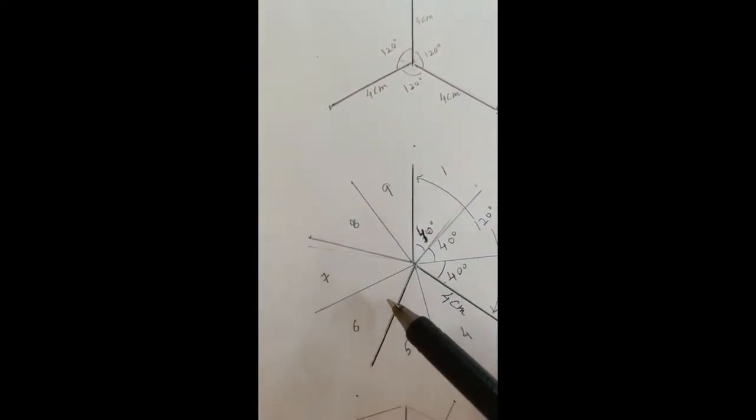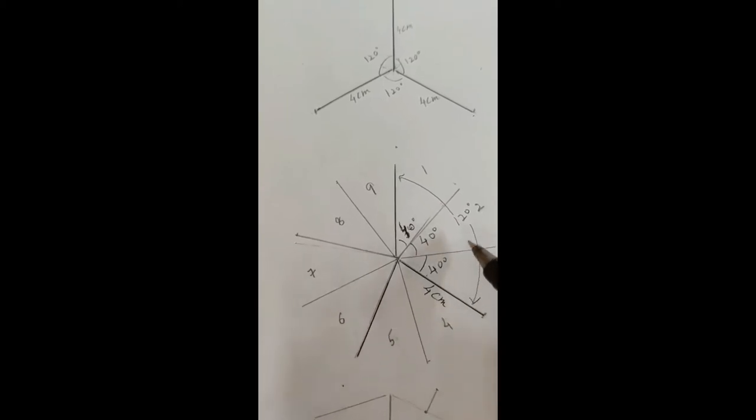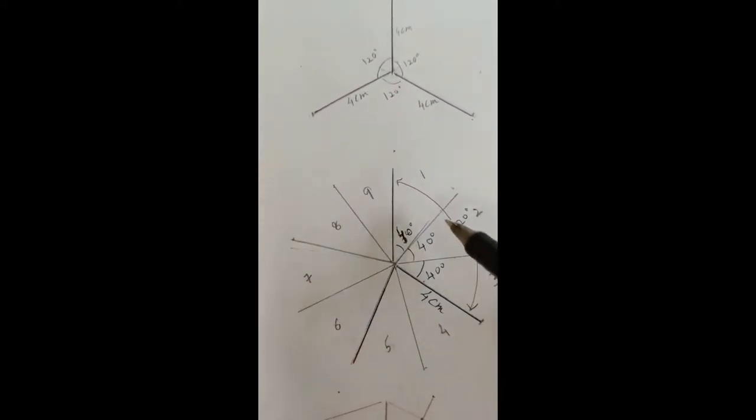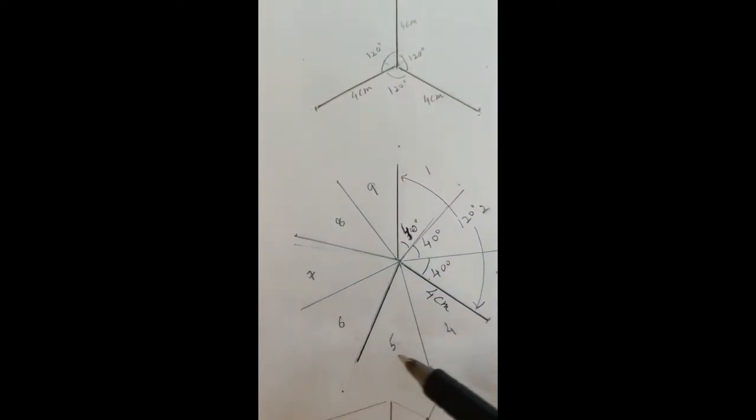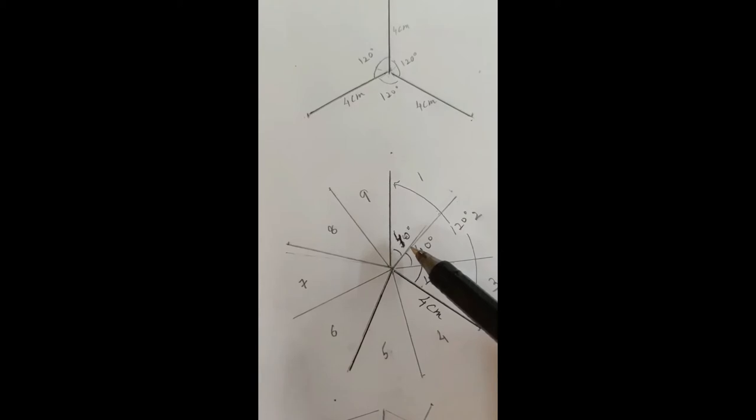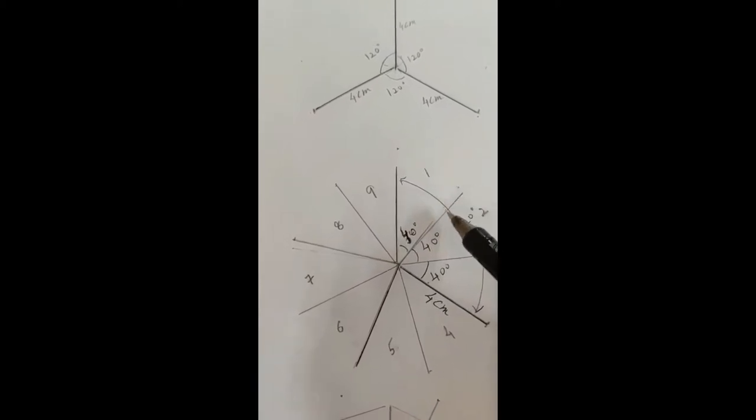Similarly on these sides, 120 degrees all divided into 3. So total we have got 9 sectors of a circle. You have not drawn the periphery. 9 sectors with 40 degrees each and the length of the line is 4 centimeter.